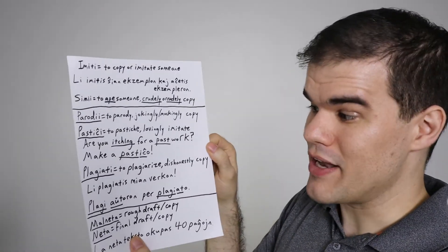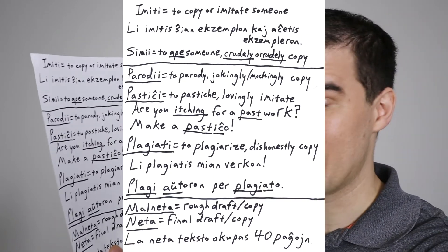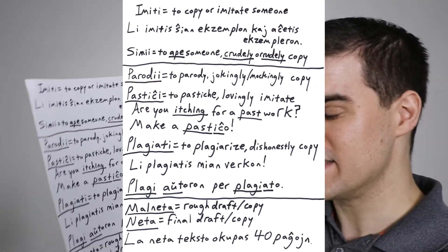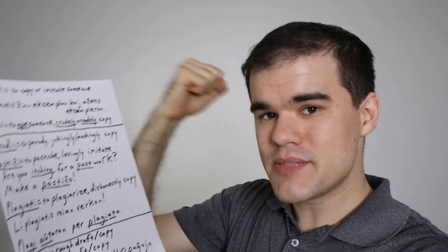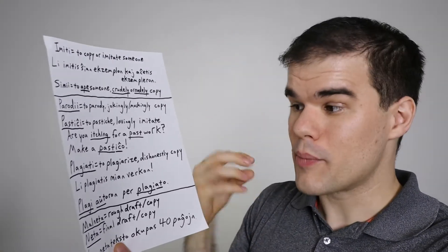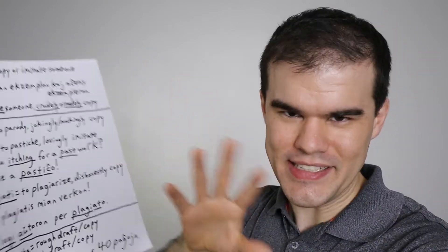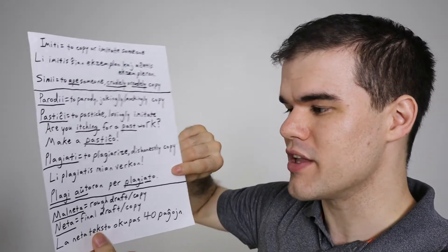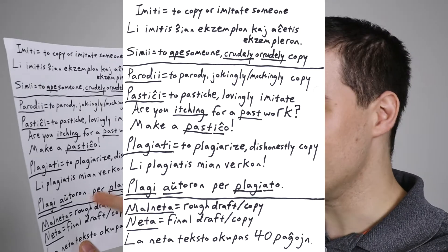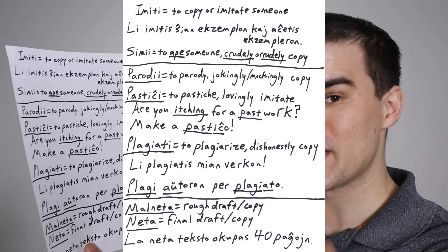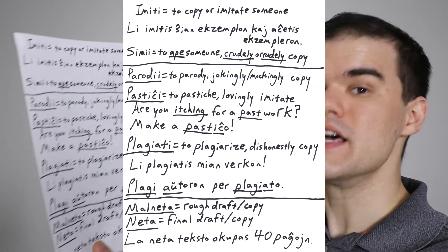Finally, we have the ugly, the bad one. Plagiati. It's to plagiarize, to dishonestly copy, to steal something and then pass it off as your own. That is plagiati. Li plagiati smian verco and he plagiarized my work of art. And a way to remember plagiati in the exact spelling, because it's not exactly plagiarizo or plagiarizey. It's different enough that you need to make sure you know how to spell it here. Plagi autoron per plagiato. To plague an author by way of plagiarism. Plagi is to plague. So, plagi autoron, plagiato, plagiato. That is plagiarism.